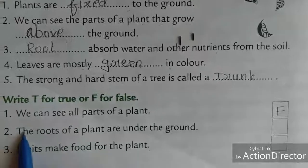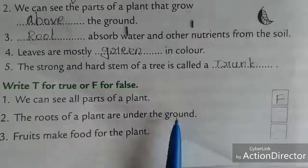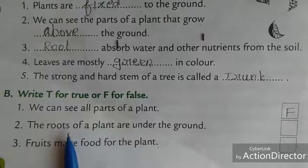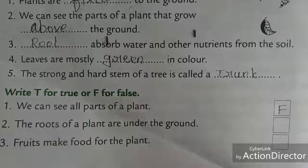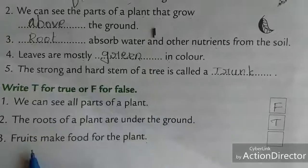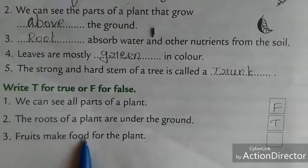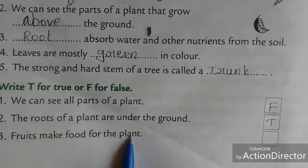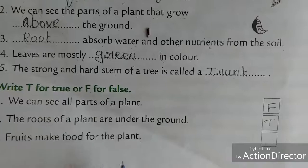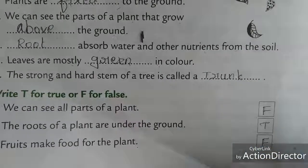Next: the roots of a plant are under the ground. Yes, roots are under the ground — this is true. Write here: T. Third: fruits make food for the plant. No, leaves are the ones that make food for plants. So this is false. Write here: F.